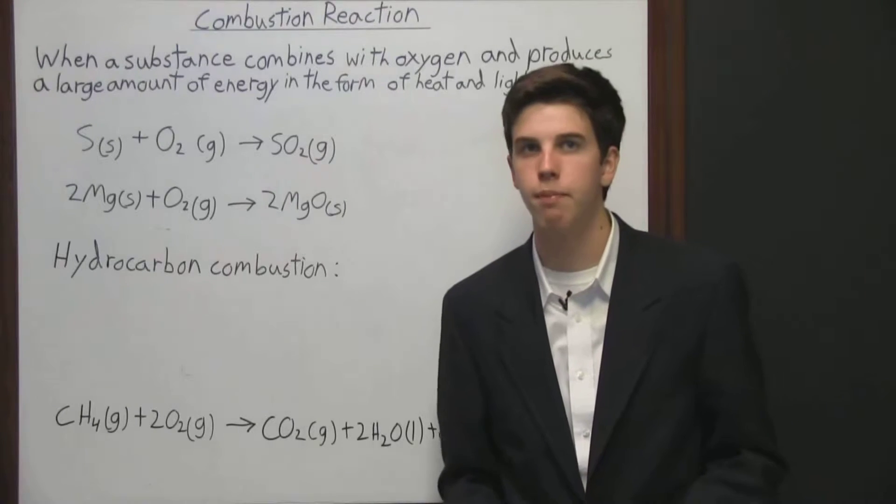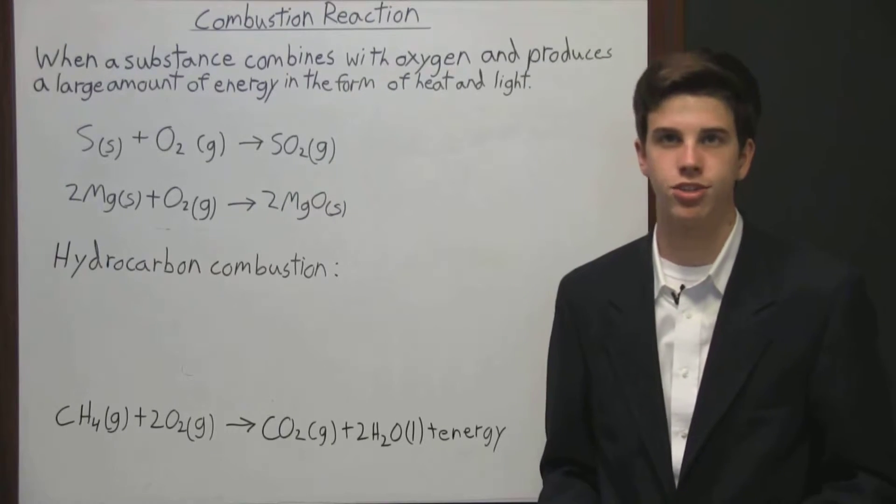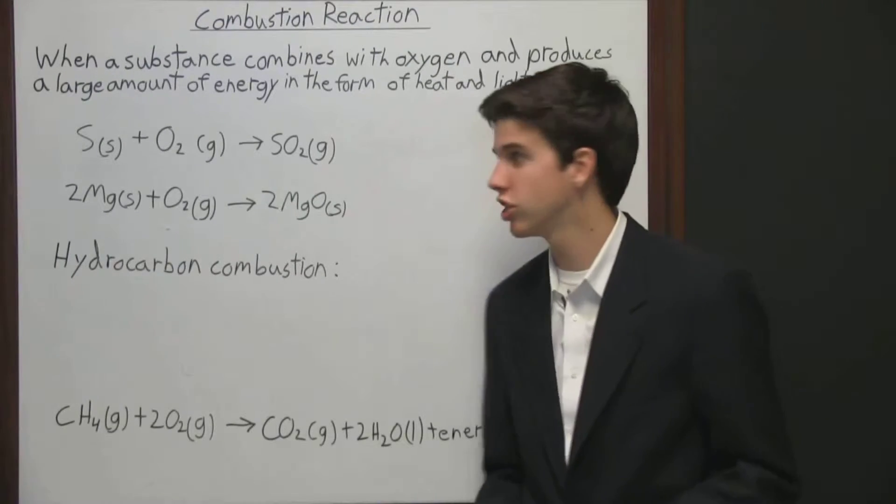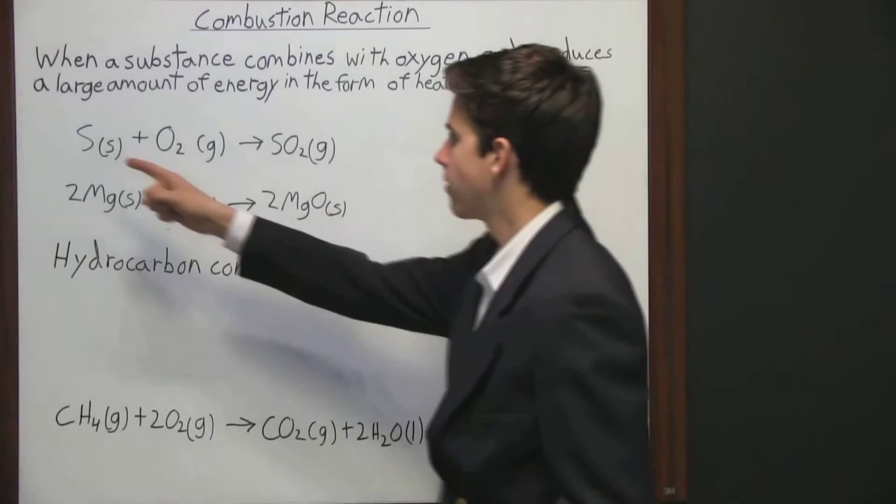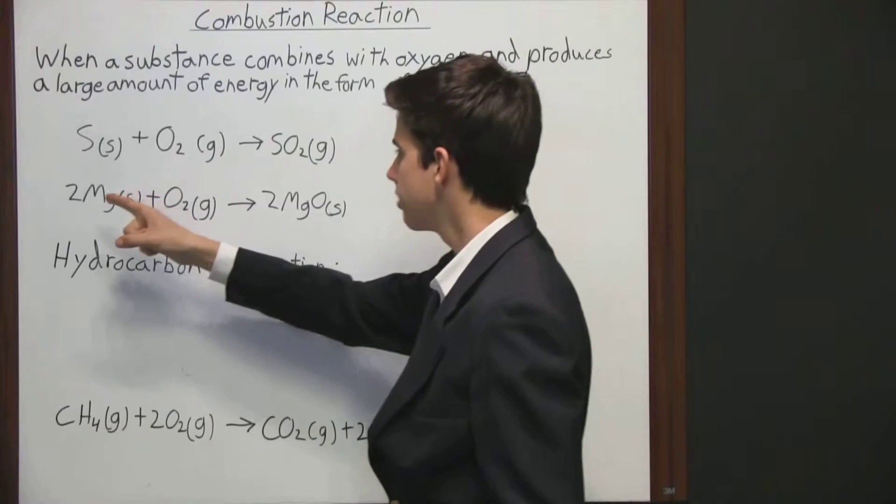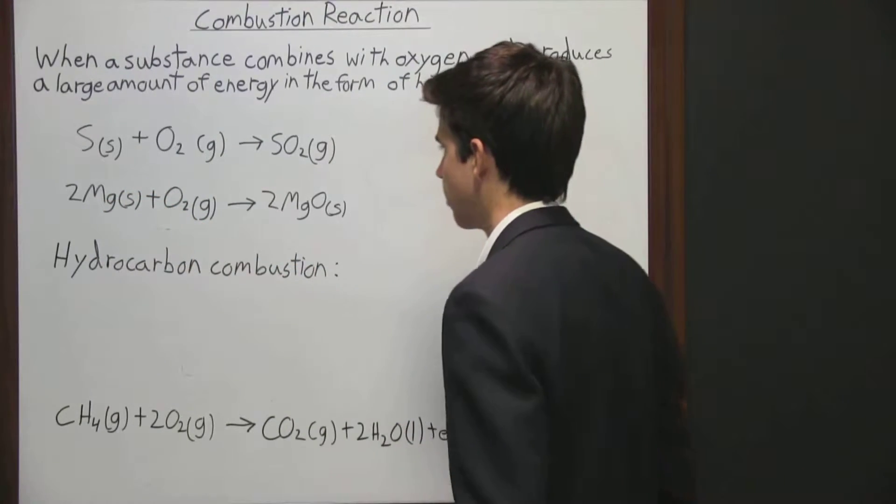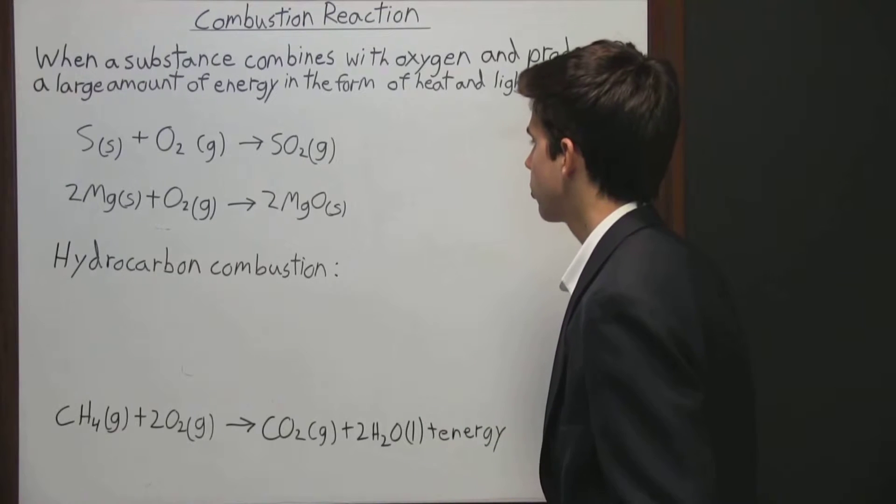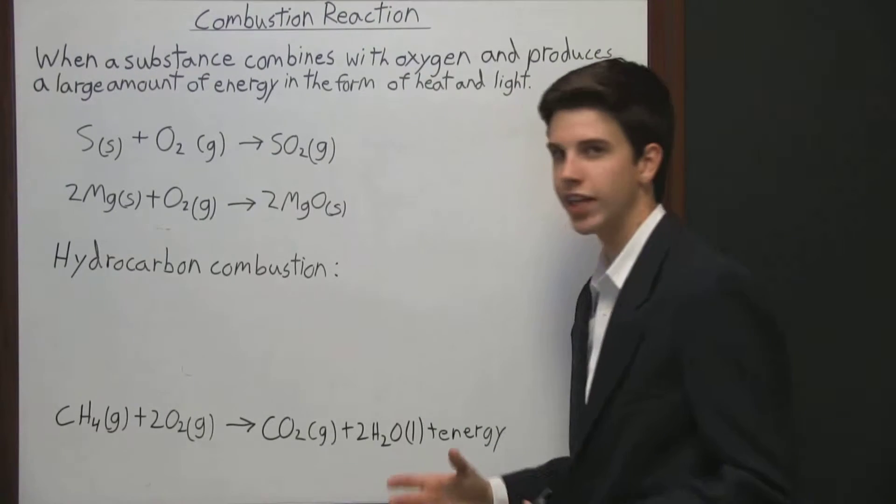Oxygen can combust with compounds such as magnesium and sulfur. Here are some examples of sulfur and magnesium combustion reactions. We have sulfur combusting with oxygen and magnesium combusting with oxygen. In addition to the compounds that they form, they are also creating energy in the forms of heat and light.